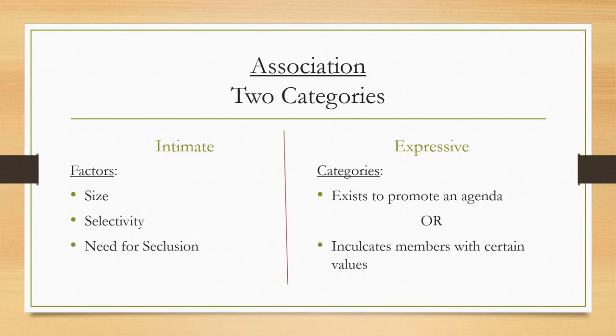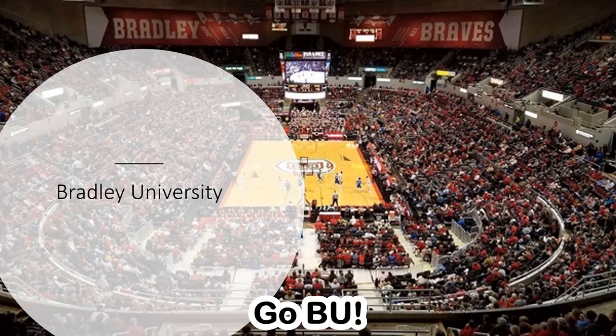Need for seclusion is another factor the courts look at. I went to the University of Illinois. There was a big fraternity row called Fredonia Avenue with fraternities and sororities lining the streets. There was this thing called I-Week, Initiation Week, where the pledges were being initiated. All of the windows would be papered over so that you couldn't see what was going on inside those sorority and fraternity houses — because there were secret rituals. So need for seclusion: if you're one of those types of organizations that has a secret handshake, your own mantras and regalia, that's more likely to be an intimate association.